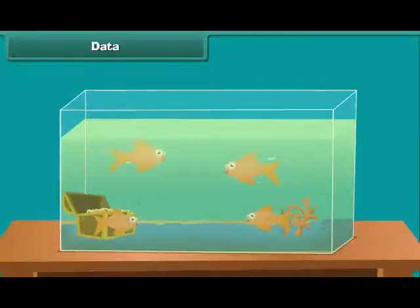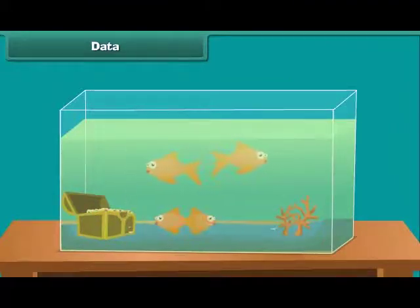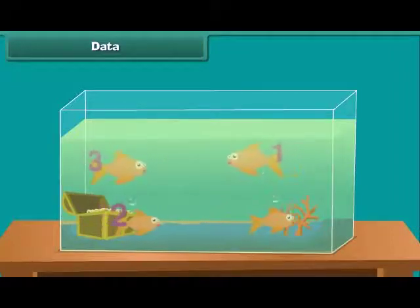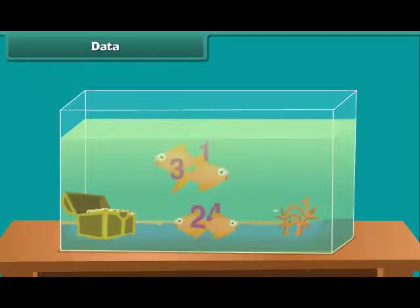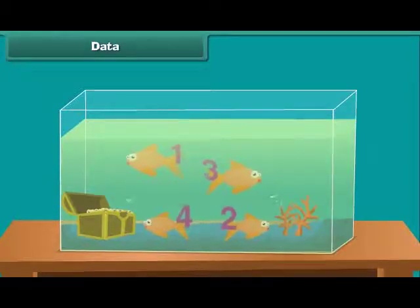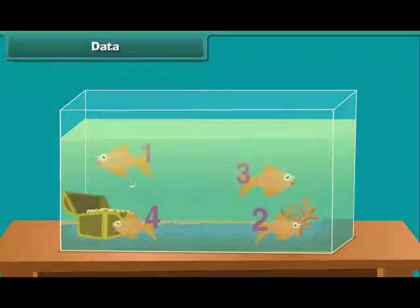Now let us find the data count of orange fishes in a tank. How many are there? 1, 2, 3, 4. 4 fishes. Hence, the data is 4. Number of orange fishes is 4.